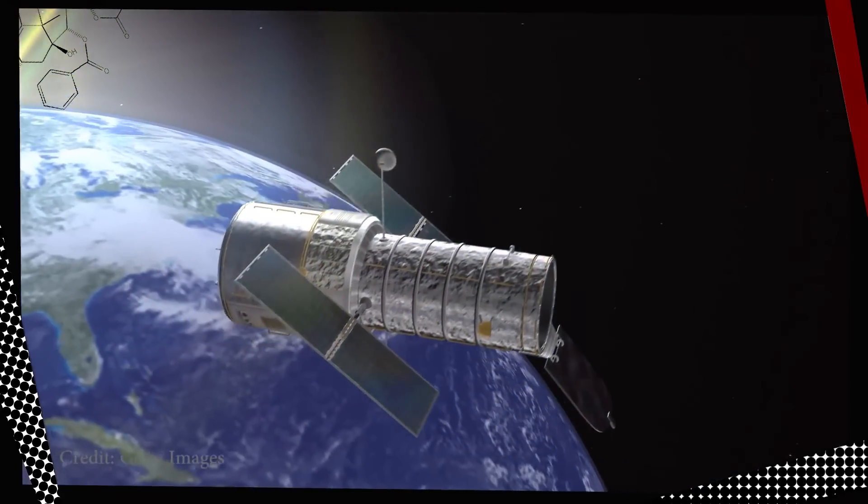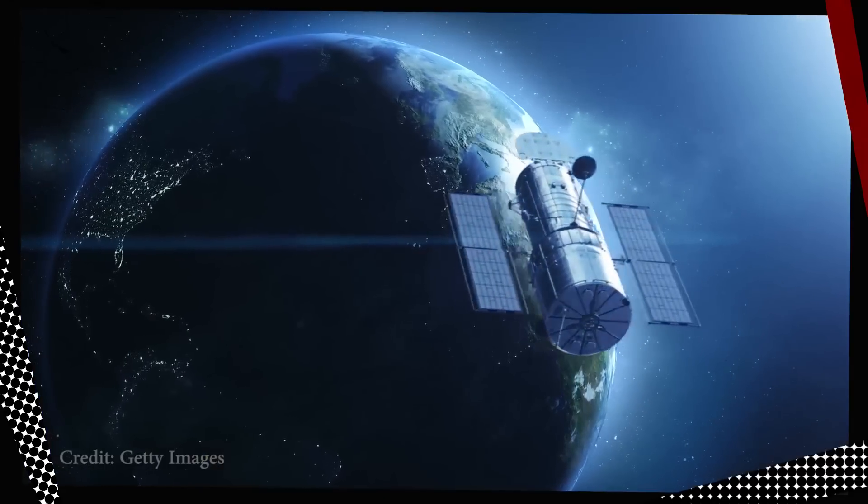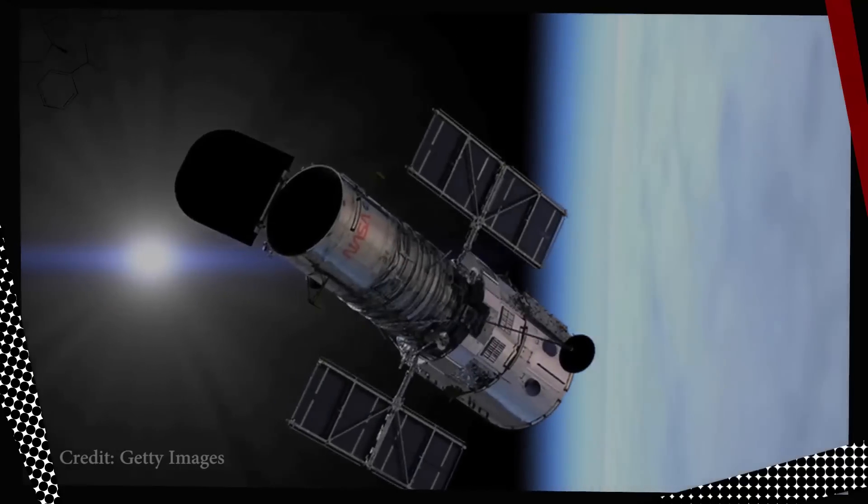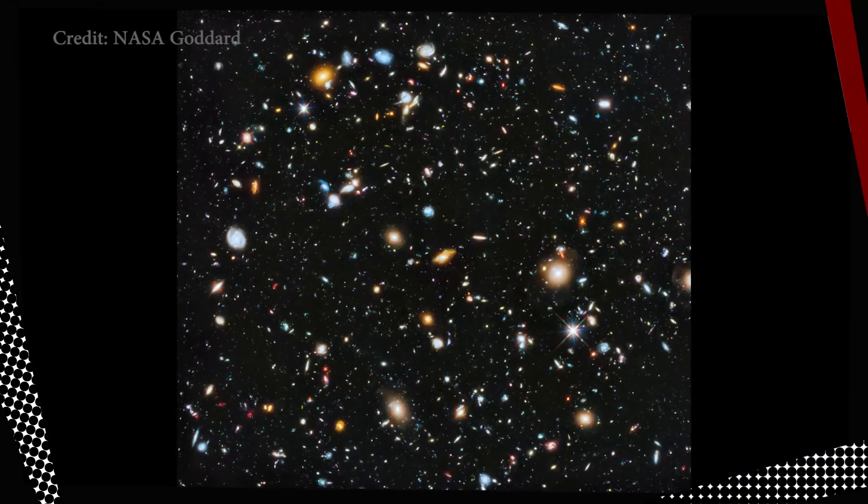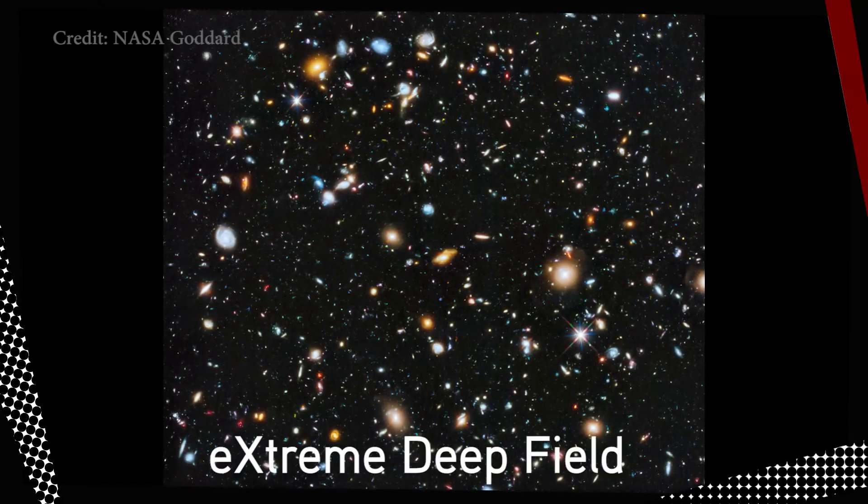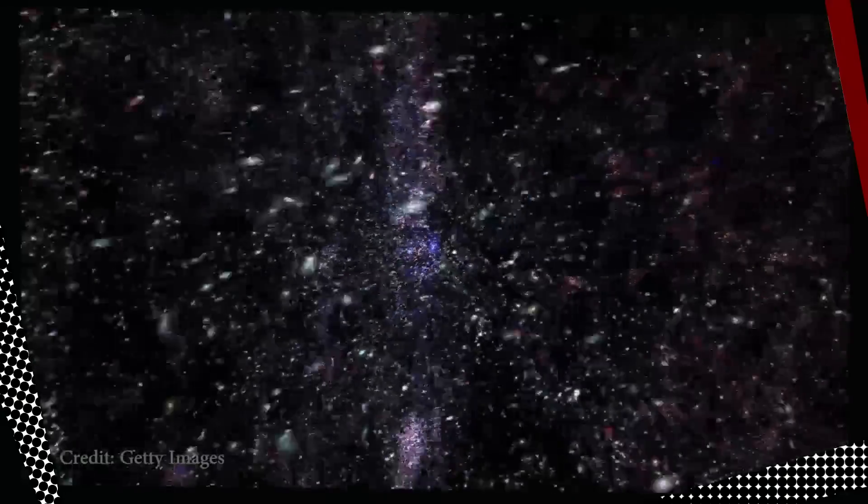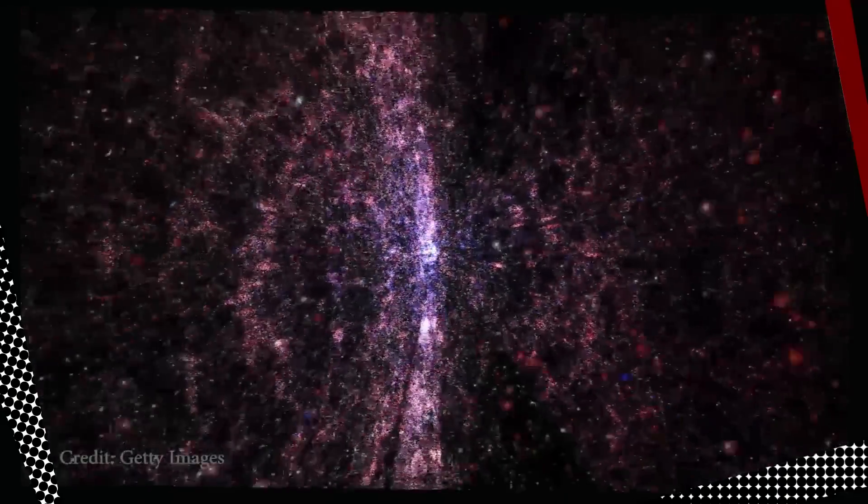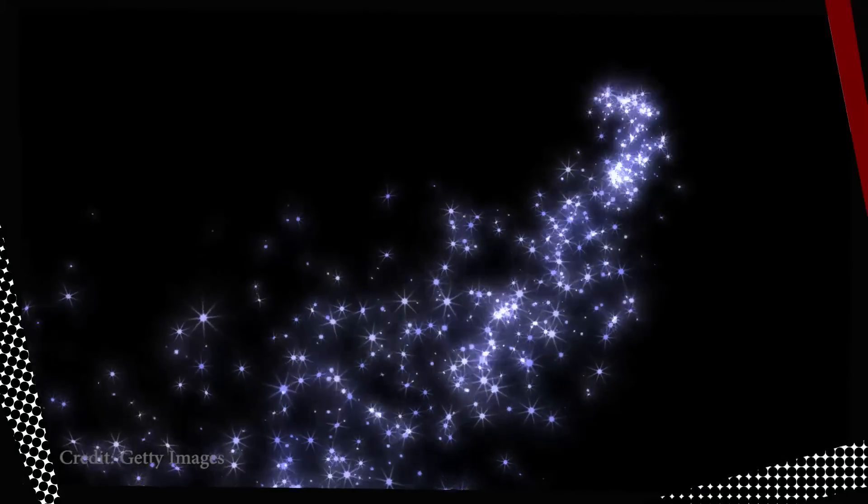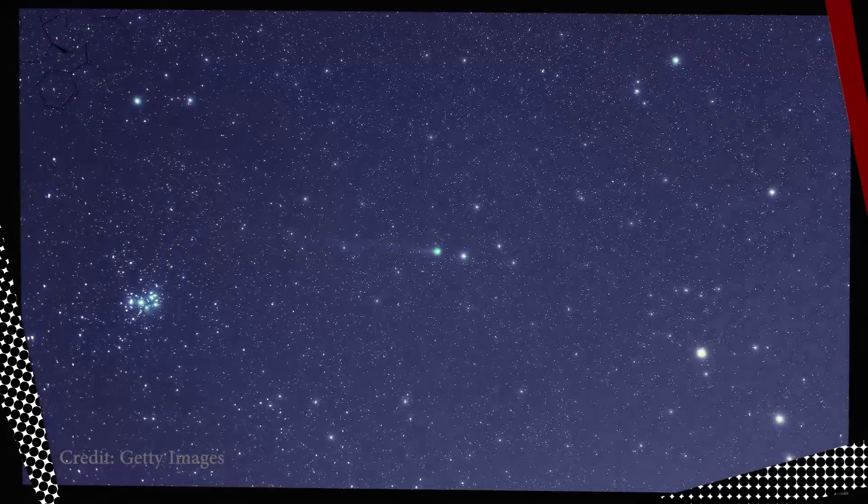And with Hubble's infrared and ultraviolet sensors, we have an image that's called the deepest look into our universe to date. That was published in 2012. And it's dubbed the extreme deep field. It shows 5,500 galaxies that span back 13.2 billion years in time. That allows us to observe light from some of the earliest galaxies and stars that ever formed.